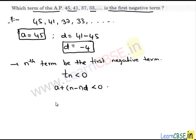Let's substitute the values. We have 45 plus (n minus 1) times negative 4, which is less than zero.